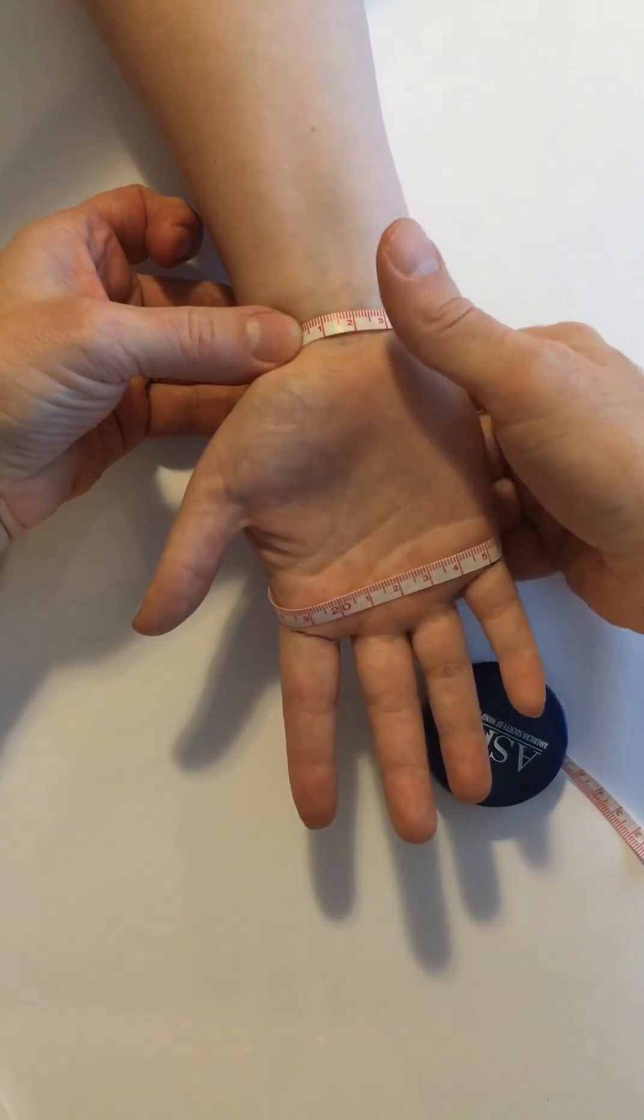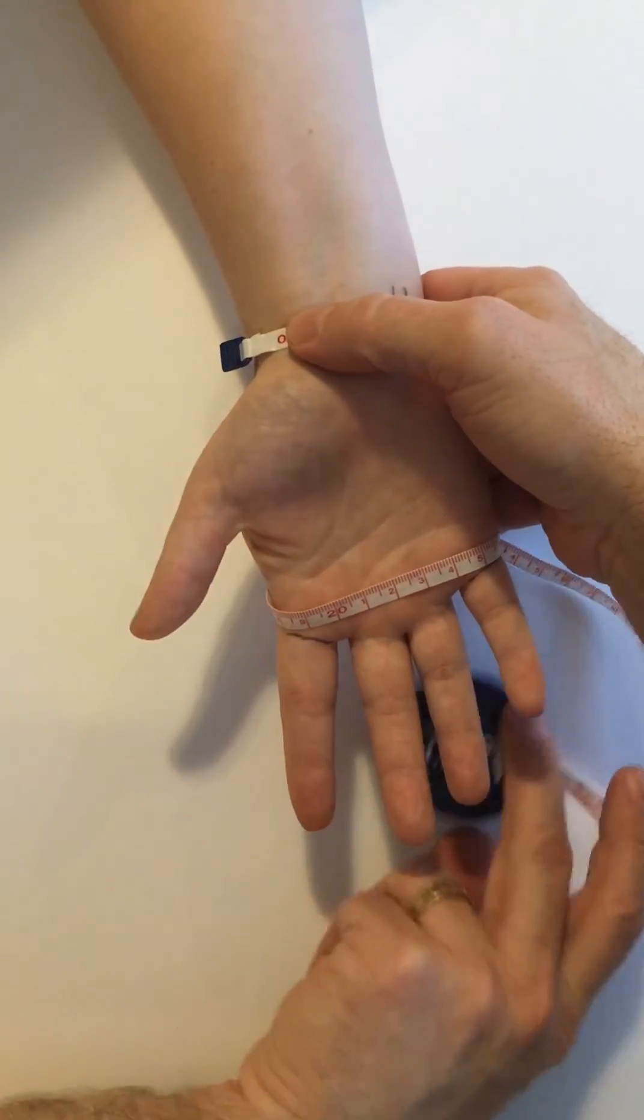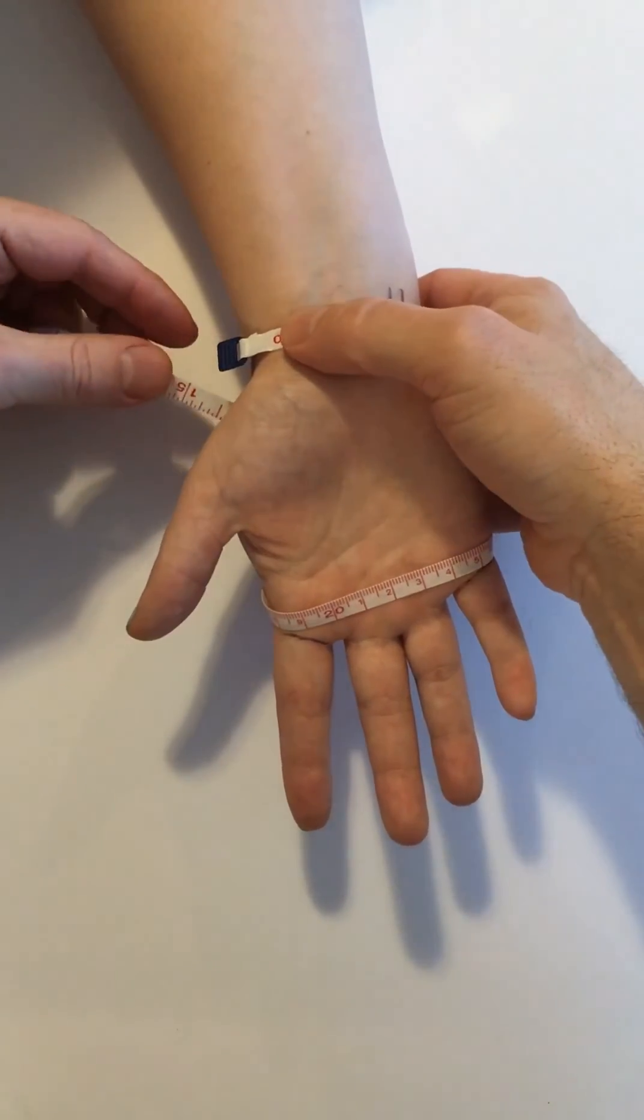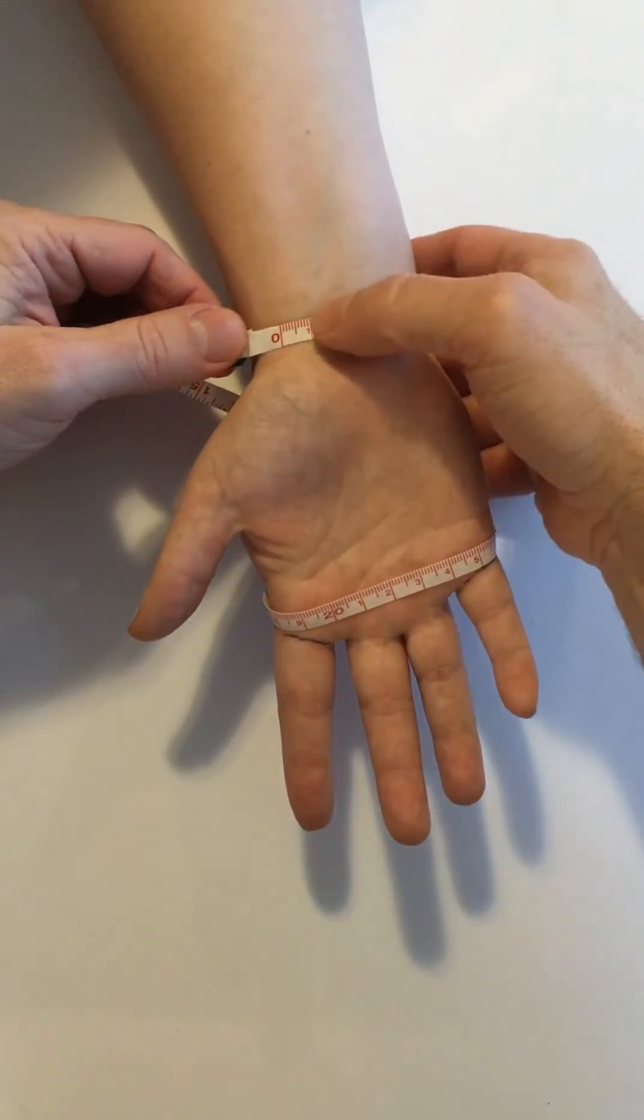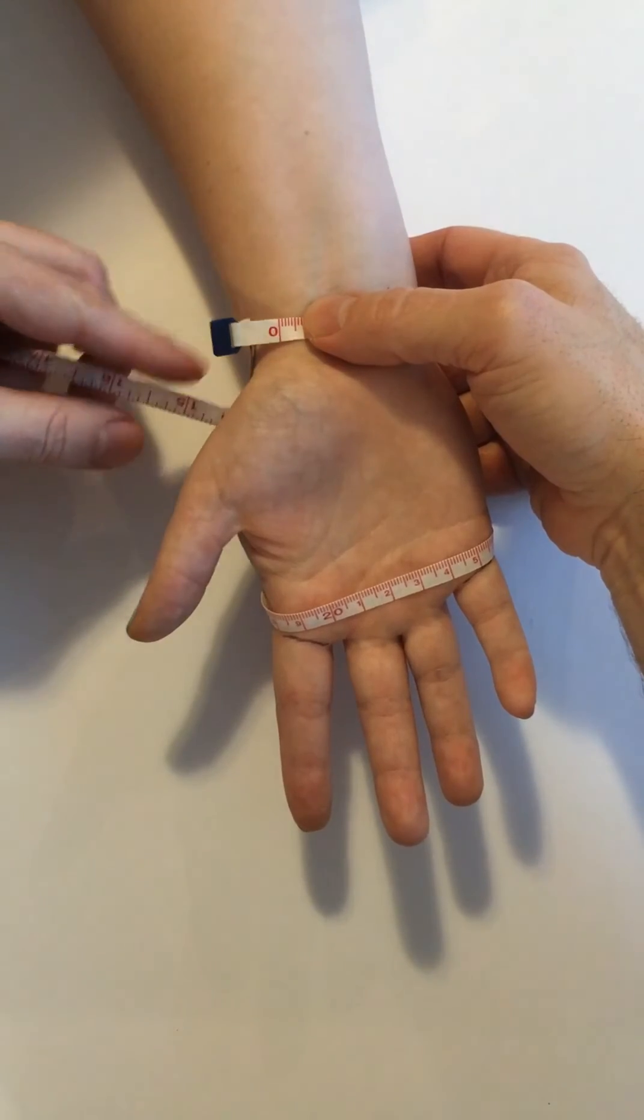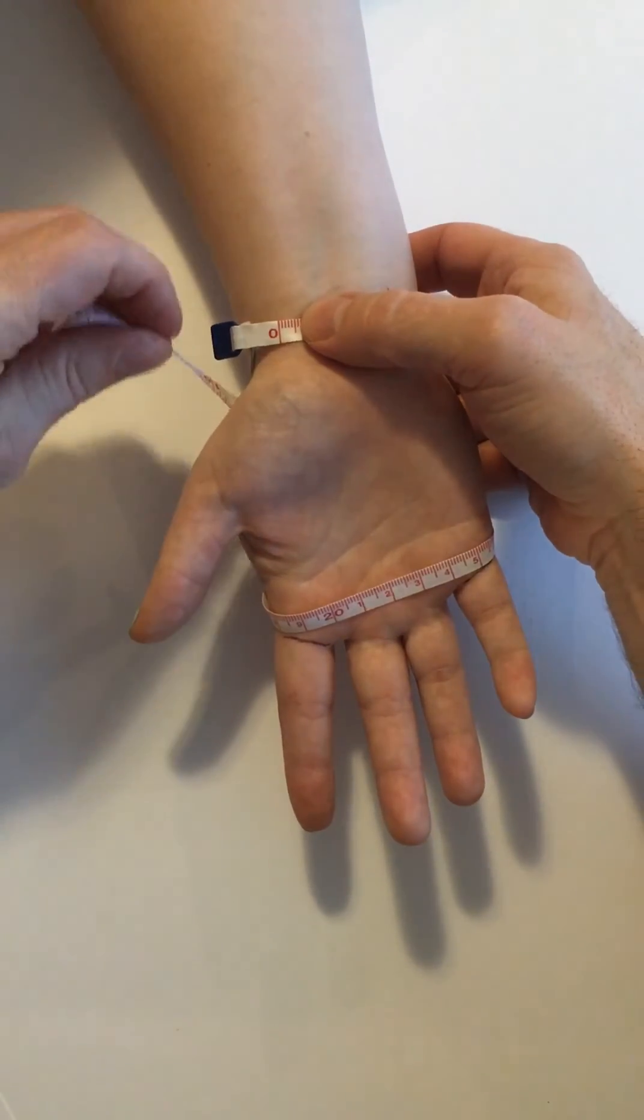Again bring it obliquely and proximally across the back of the hand so we come back to about where we started and cross the abductor pollicis longus tendon again.